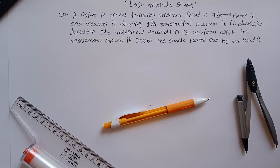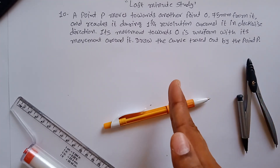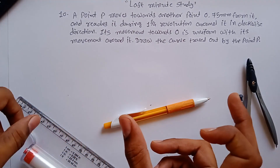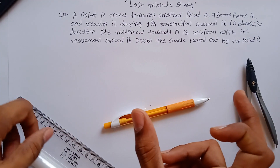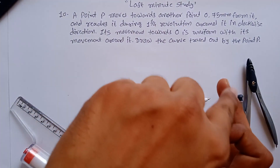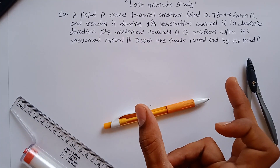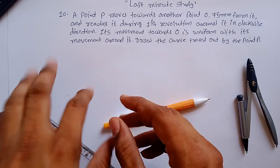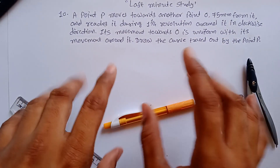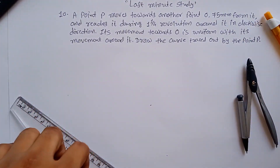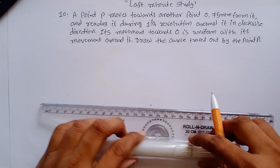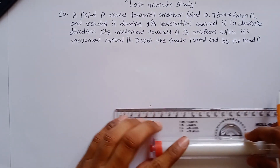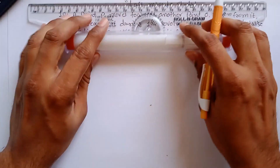Problem number 10 for engineering drawing: a point is moving towards another point O, which is 75mm away. The distance between these two points is 75mm and it comes around with one and one-fourth of a revolution, touching that point in a clockwise direction. This kind of problem is based on a spiral — specifically an Archimedean spiral. To construct it, first we have to draw a 75mm long line horizontally.